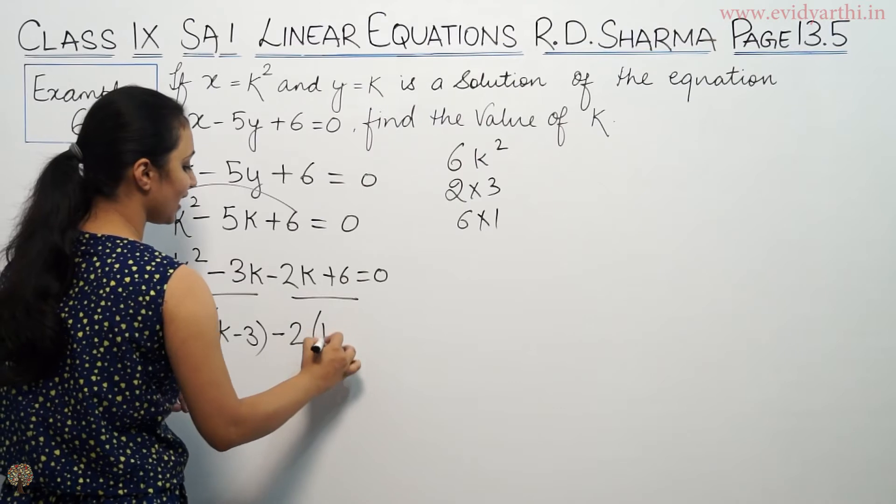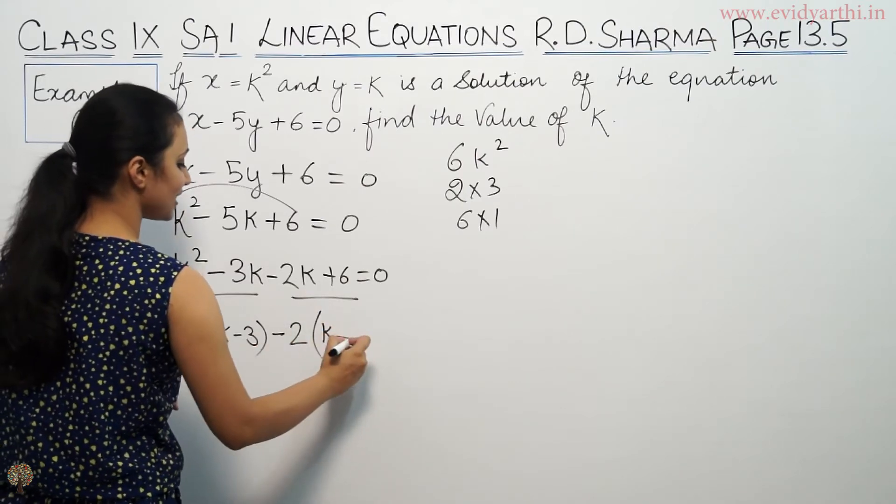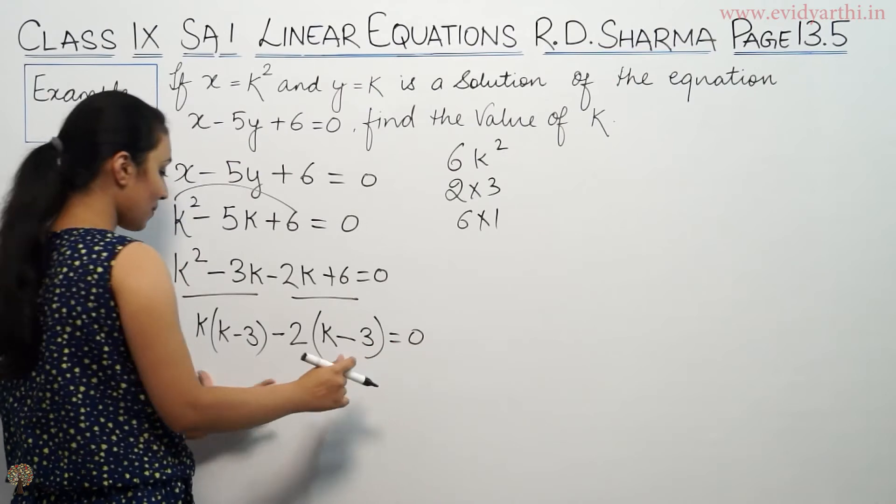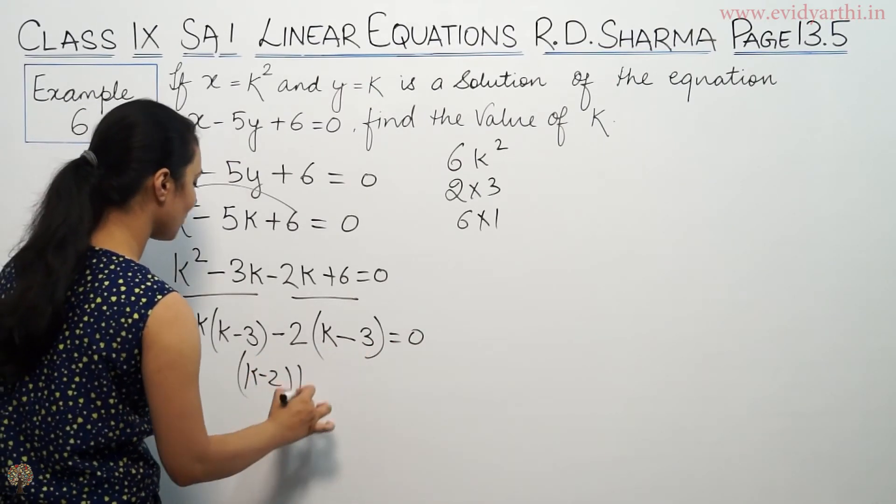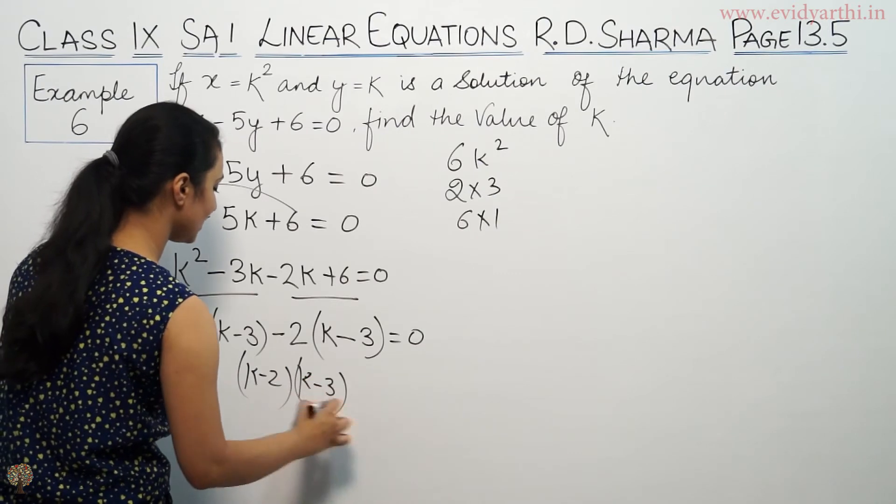Now, we have minus 2 common, k minus 3. Minus plus minus 2, 3s are 6. So, we have both brackets same. That means step is correct. So, k minus 2, k minus 3 equals 0.